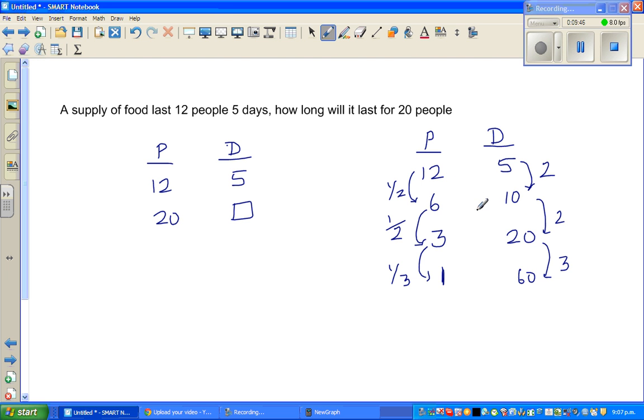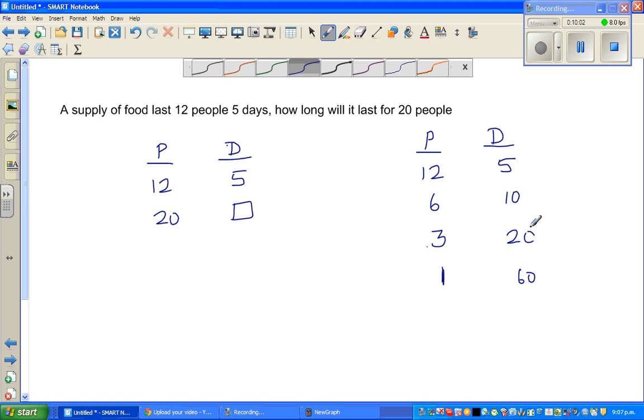And see whether you can find a relation between P, number of people, and number of days. That's the crucial thing I want you to see. Can you see a relation between these two numbers? 12 and 5. What is 12 times 5? I think you should know. It is 60. What is 6 times 10? It is 60. 3 times 20 is 60.